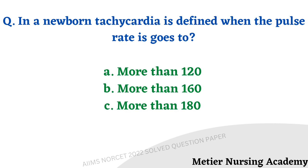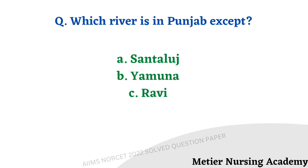In a newborn, tachycardia is defined when the pulse rate goes to more than 120, more than 160, or more than 180. The right answer is option B, more than 160. It is a direct question. Which river is in Punjab, except? Options: Santaluca, Yamuna, Ravi. The right answer is option B, Yamuna.